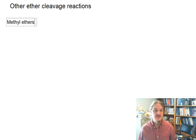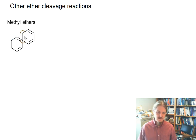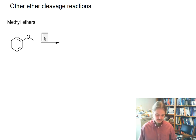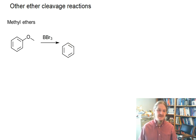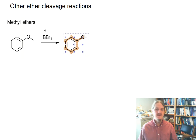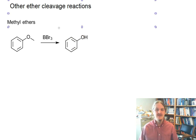The first reaction I'm going to describe is one that works pretty well for methyl ethers. If I have phenylmethyl ether, or methoxybenzene, methyl ethers on a wide range of compounds can be cleaved using BBr₃ as a Lewis acid catalyst instead of a Brønsted acid catalyst.